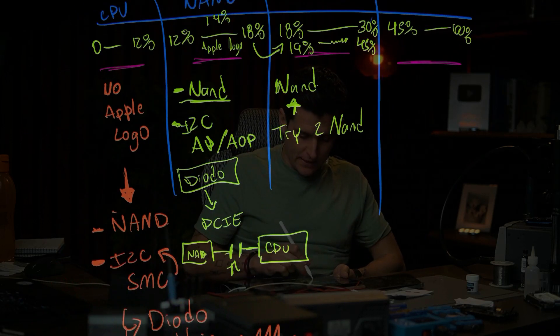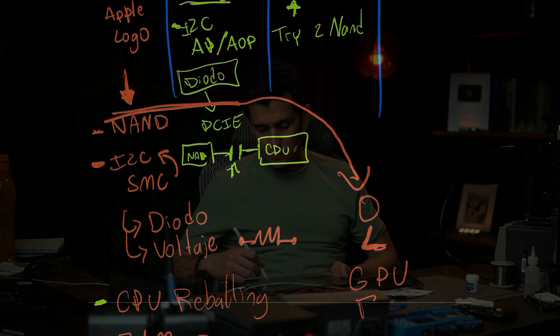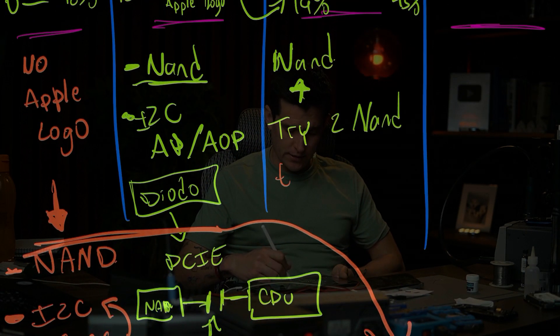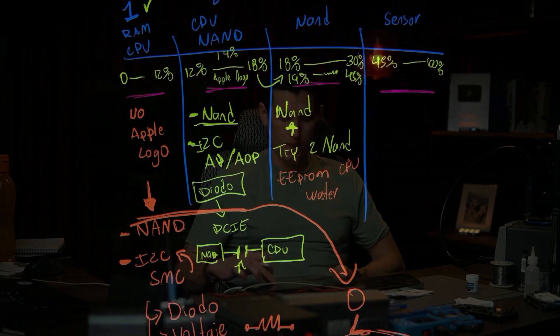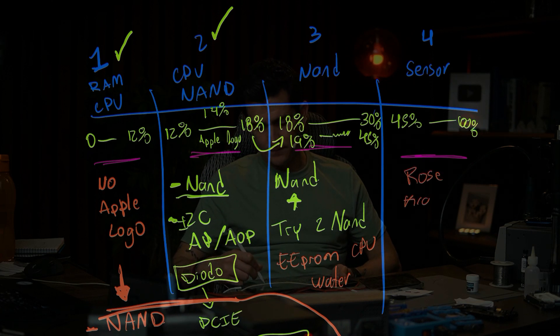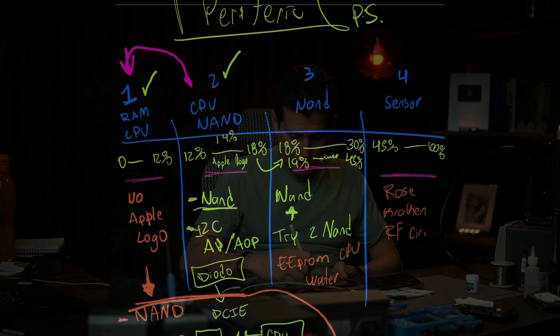Another thing that can cause a problem in stage 3 is the GPU buck coil — I'll show you how to fix that later, it's not common but it happens. Also check the EPROM on the CPU — sometimes the phone is water damaged. In stage 4, you can have a problem with Kraken or other RF circuits. When the phone transitions between stages, you'll hear it disconnect and reconnect two or three times.